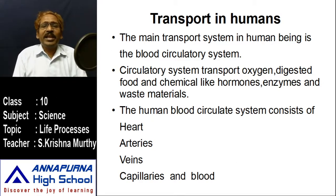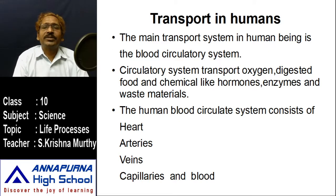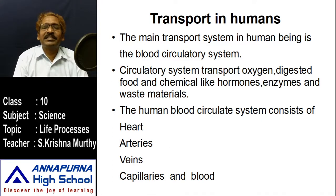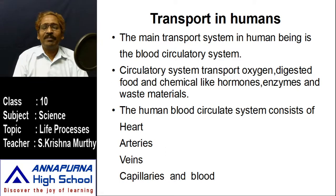To transport these materials, the human body has different kinds of organs which belong to the circulatory system. The circulatory system consists of the heart, blood vessels, and blood. The blood vessels are of three kinds: arteries, which are the big blood vessels; veins, which are smaller than the arteries; and capillaries, which are smaller than both veins and arteries.